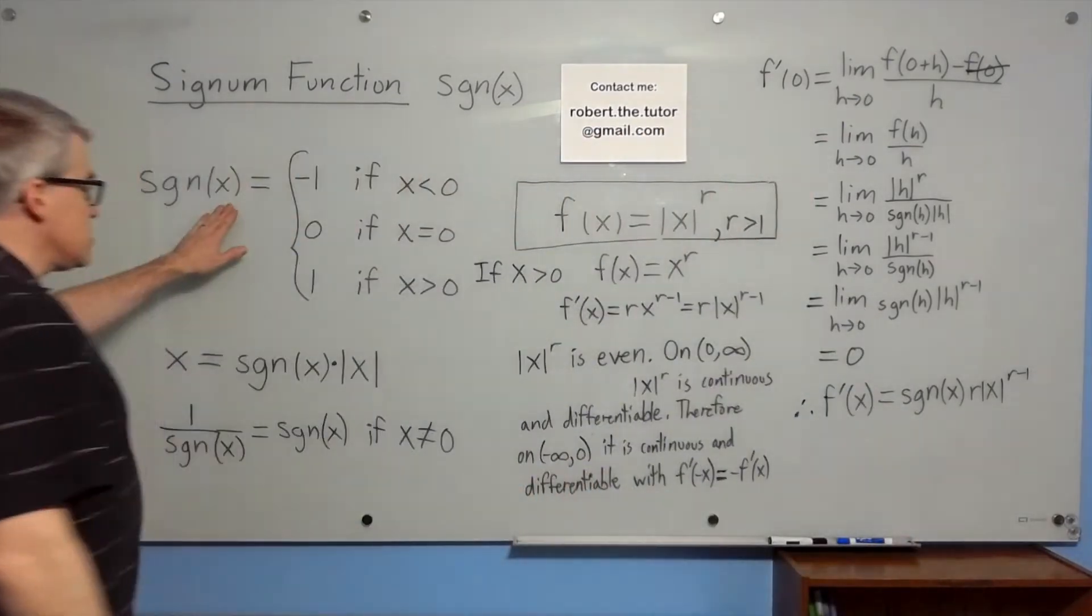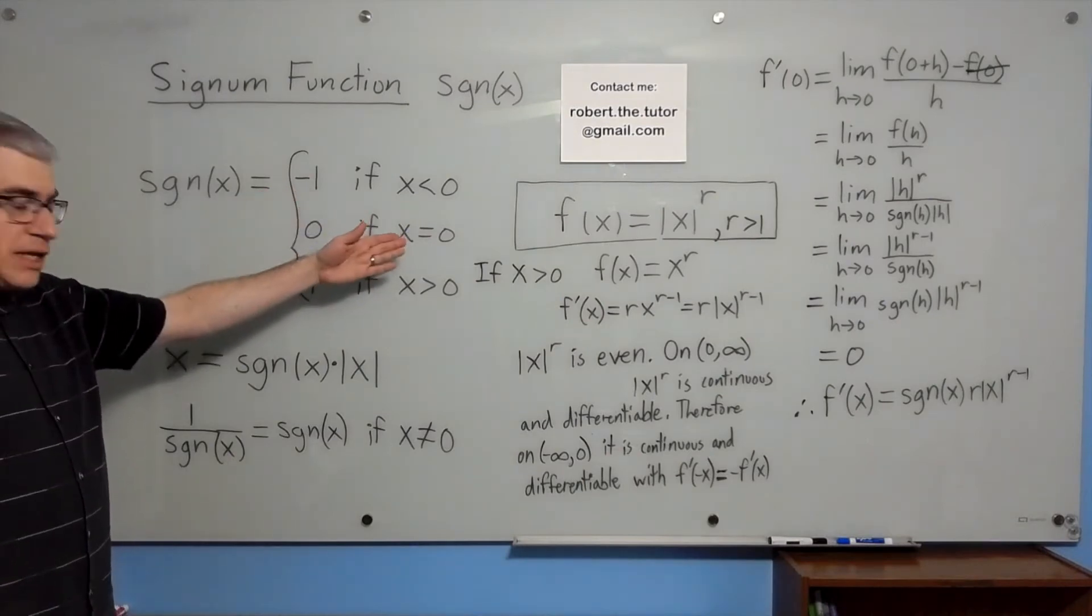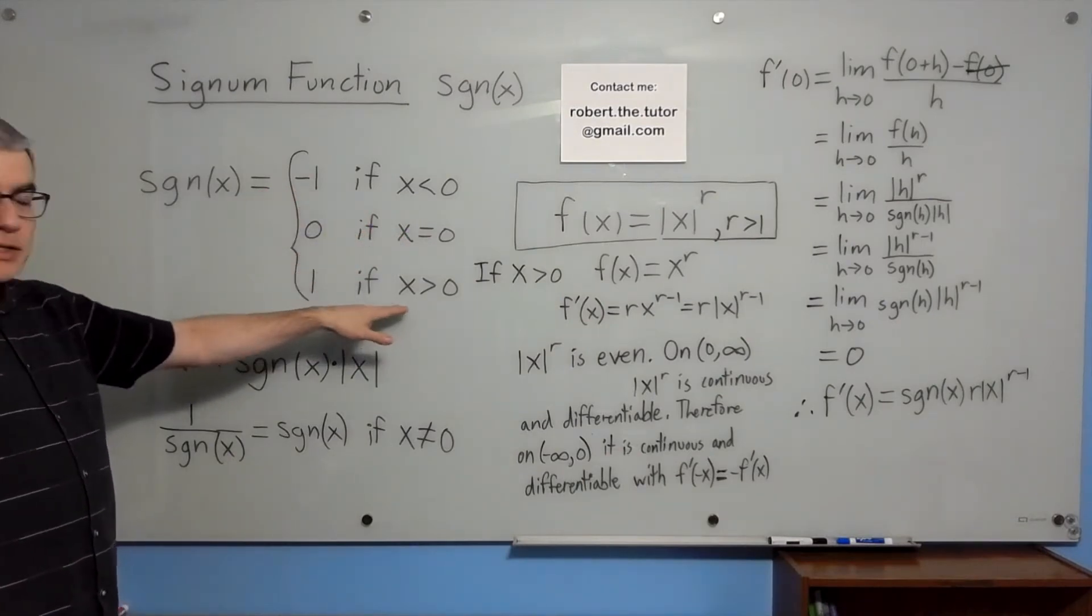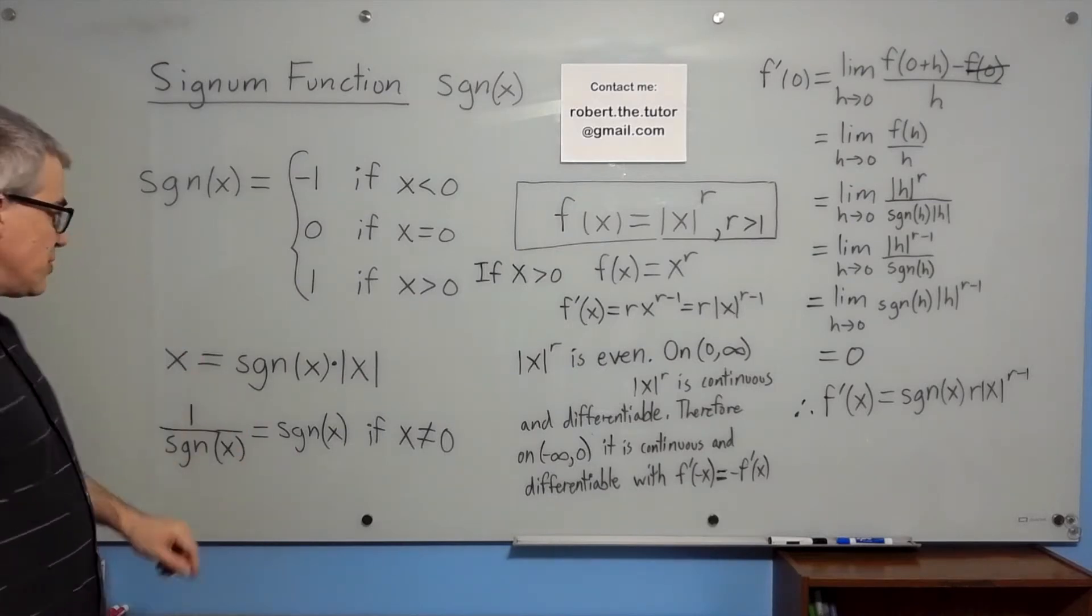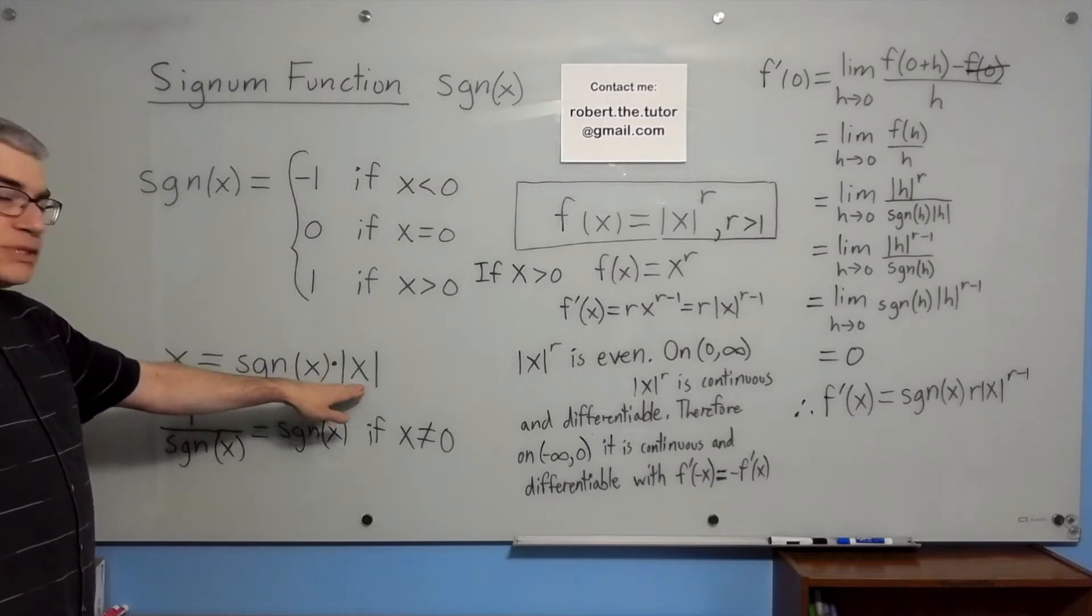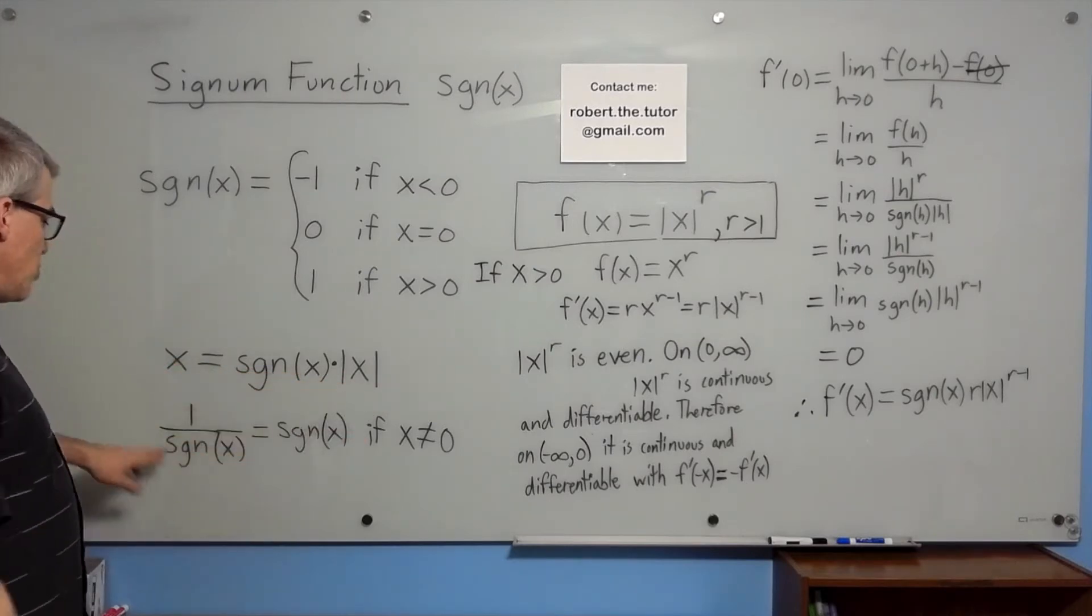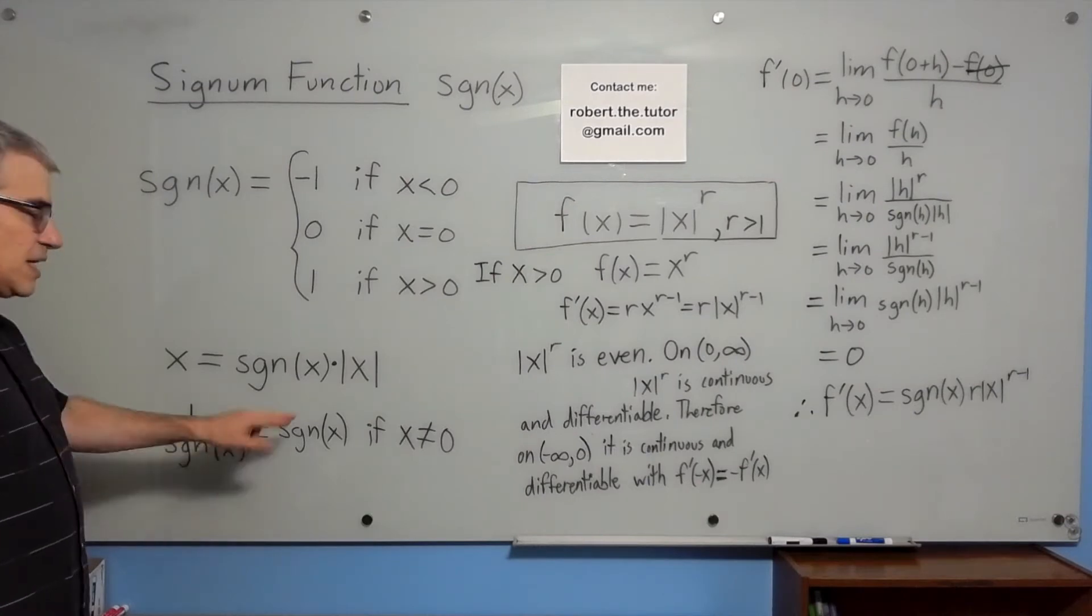The signum of x is negative one if x is negative, one if x is positive, and zero if x is zero. This is useful because that means that x is signum x times the absolute value of x. I'll also point out that if x is not zero, one over signum x is the same thing as signum x.